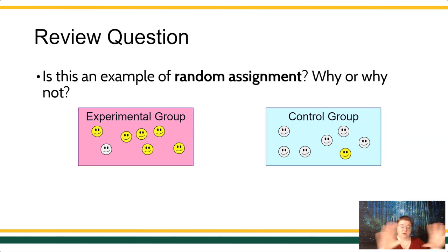But in this particular example, I'm showing you on screen a different set of groups. In the left group, the experimental group, six of the smiley faces are yellow and one is gray. And on the right, I'm showing you the control group. And in that group, six of them are gray and one of them is yellow.